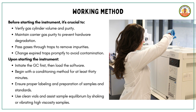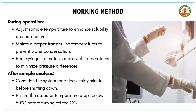During operation, adjust sample temperature to enhance solubility and equilibrium. Maintain proper transfer line temperatures to prevent water condensation. Heat syringes to match sample vial temperatures to minimize pressure differences. After sample analysis, condition the system for at least 30 minutes before shutting down. Ensure the detector temperature drops below 50°C before turning off the GC.